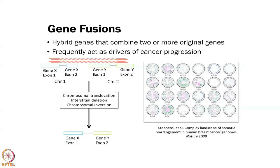Gene fusions can also come out of RNA-seq data. Gene fusions occur when a gene from one chromosome — or far away on the same chromosome — is fused with another gene. For example, gene X on chromosome 1 and gene Y on chromosome 2 can be connected because of chromosomal rearrangements, which typically occur in cancer. Some tumors have many rearrangements and others do not, so you will get fusion genes in certain samples and not others.